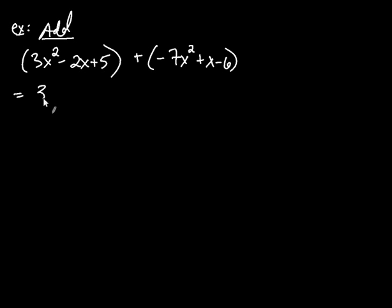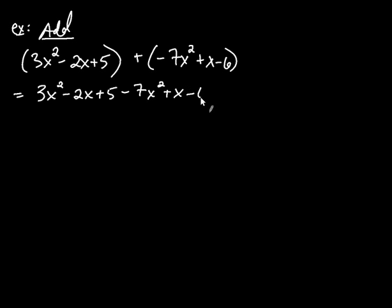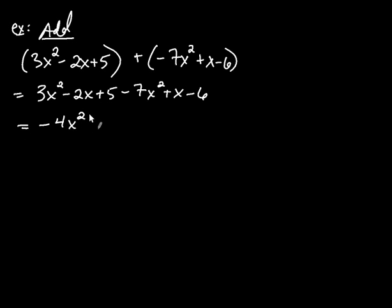So I'm going to write 3x squared minus 2x plus 5, and then plus a negative — that's the same as subtraction — so minus 7x squared plus x minus 6. Now combining like terms: 3x squared and negative 7x squared. Thinking of the negative as going with the 7, so 3 plus negative 7 gives me negative 4x squared. You combine like terms by adding the coefficients.